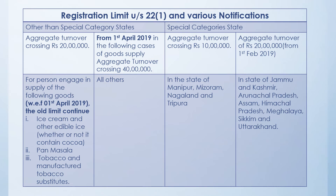In the states of Jammu and Kashmir, Arunachal Pradesh, Assam, Himachal Pradesh, Meghalaya, Sikkim, and Uttarakhand, from 1st February 2019 this limit has become 20 lakhs. So if you are crossing the provided limit in a provided state, then you have to compulsorily go for registration.